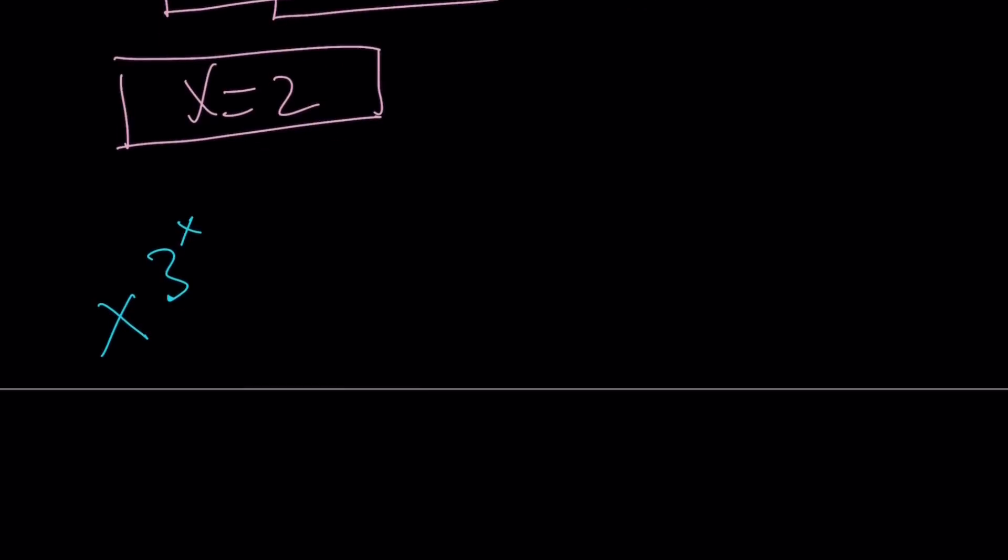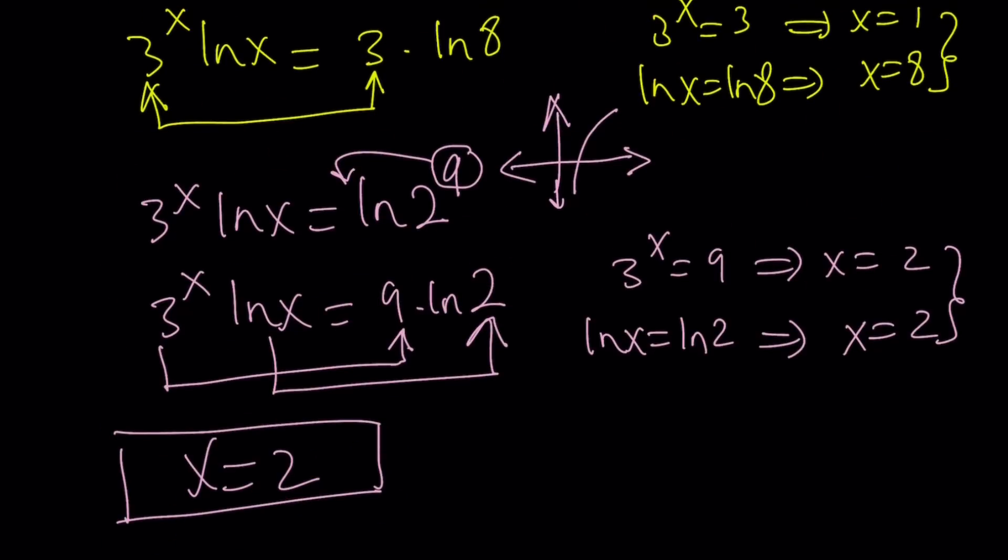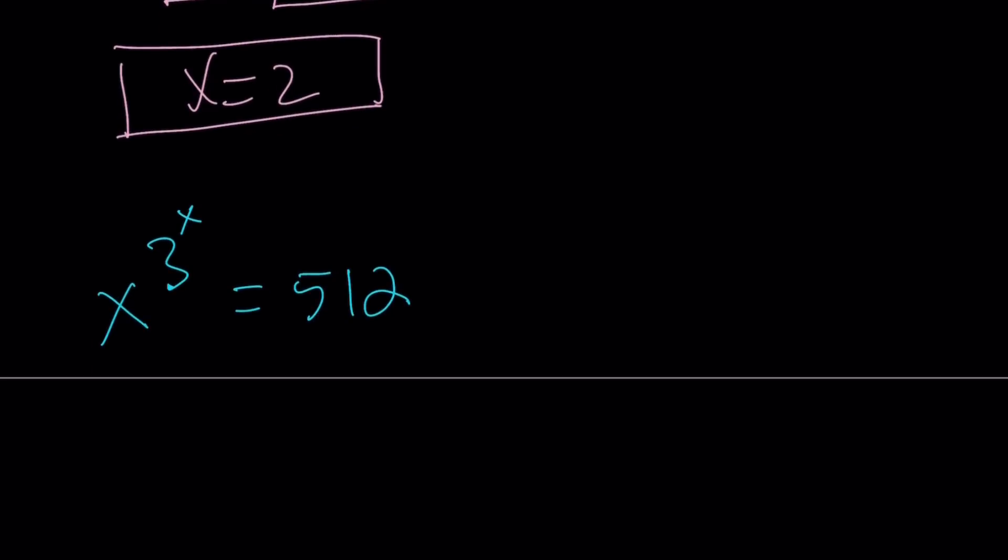So we have x to the power 3 to the power x equals 512. So this is my thinking, just like before, without ln-ing both sides. So here I'm thinking, can I write 512 as a power so that there's a base which is x and there's an exponent which is 3 to the x? Well, we got two options, 2 to the 9th and 8 to the 3rd. If I go by 8, that means x is going to be 8. So if I go by this, that means x is 8 and this is going to be 3 which means x is 1. So that doesn't help.